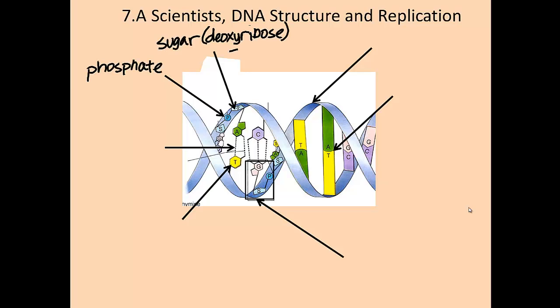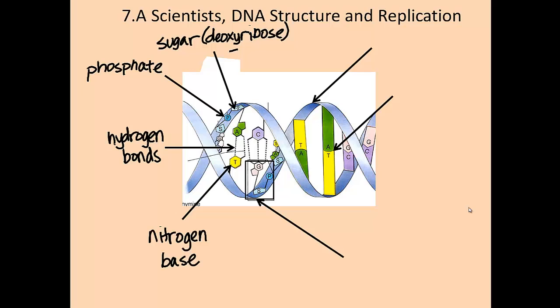We have the phosphate and the sugar which make up the backbone. We throw in the hydrogen bonds which take the nitrogenous base pairs and put them together, like adenosine and thymine. The sugar and phosphate make up this silvery blue color, which is going to end up being the backbone of the DNA, the actual double helix part.